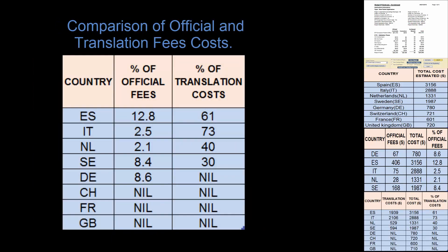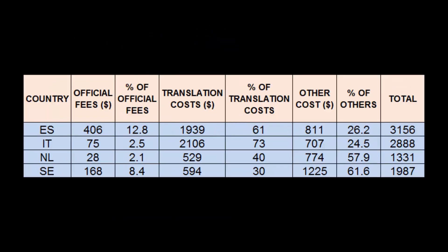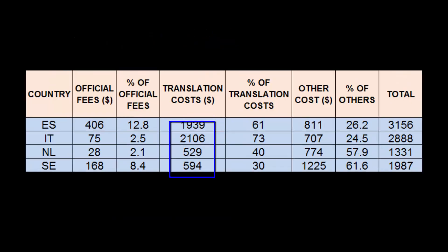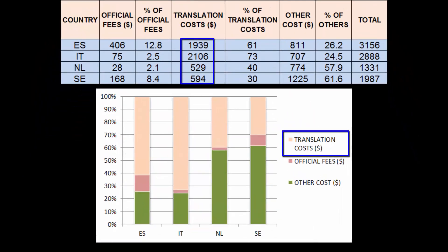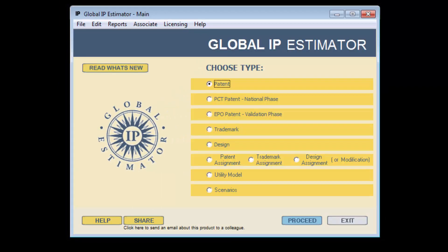Costs of translation, which are a major component of EP validation costs, can be accurately estimated for facilitating proper allocation of funds. This can be achieved by our software, the Global IP Estimator.